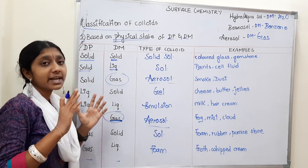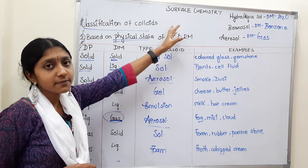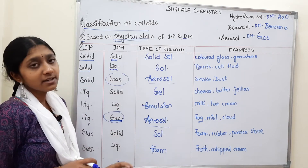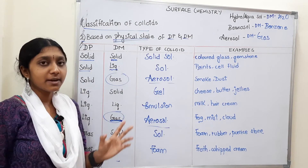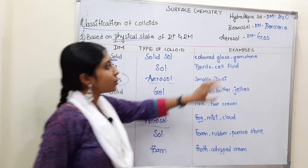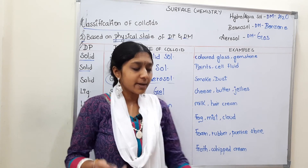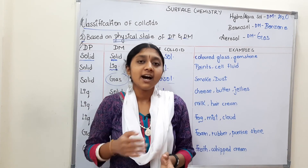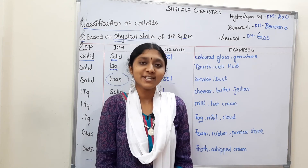To summarize, based on the physical state of the dispersion phase and dispersion medium, we classified 7 types of colloids. Gas and gas gives 8 types total but gas-gas is not a colloid. We will see the next classification in the next video. Until then, stay tuned. Bye!